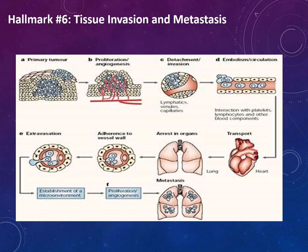Hallmark number six is tissue invasion and metastasis. A growing tumour will eventually spawn pioneer cells which move out of the original clump of mutant cells to invade nearby tissues and travel to distant sites where they form new colonies. These distant settlements are named metastases. With the exception of leukaemias, blood cancers, and some brain tumours, metastasis results in reduced survival rates and worse prognosis for patients.